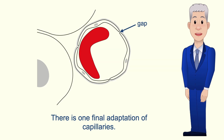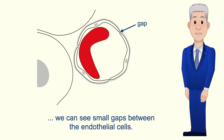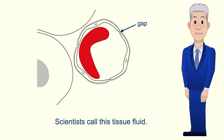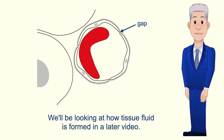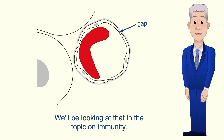There is one final adaptation of capillaries. If we look closely at the capillary wall we can see small gaps between the endothelial cells. These gaps allow fluid to pass out of the blood — scientists call this tissue fluid. Tissue fluid bathes the cells, providing essential molecules such as glucose and amino acids. We'll be looking at how tissue fluid is formed in a later video. The gaps in the capillary wall also allow white blood cells to leave the bloodstream, and we'll be looking at that in the topic on immunity.